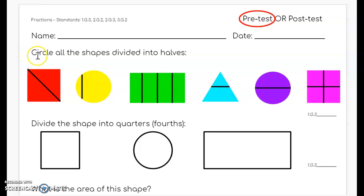The first section says circle all the shapes divided into halves. There are six shapes below. I want you to put a circle around the ones that are divided into halves. You can pause this video as you're doing that.